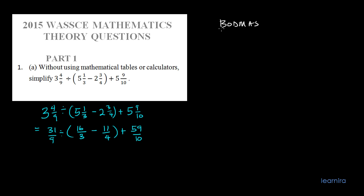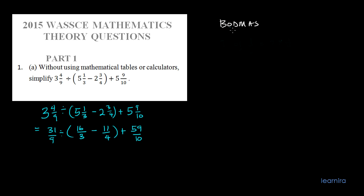Now let's apply BODMAS. Anytime we are given fractions with different operations like division, subtraction, addition, we have to follow a specific order. First, the bracket — simplify numbers in the bracket first. Then the 'of' operation; for example, 2 of 1/5 is the same as 2 times 1/5. Then division, followed by multiplication, addition, and subtraction.